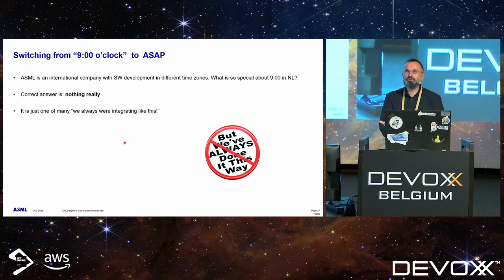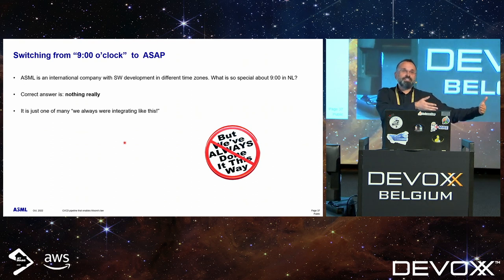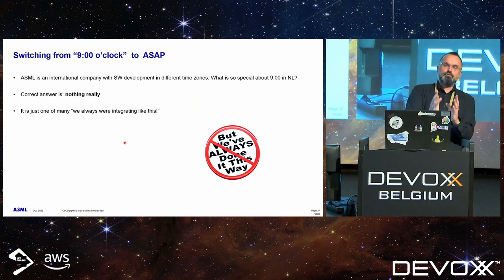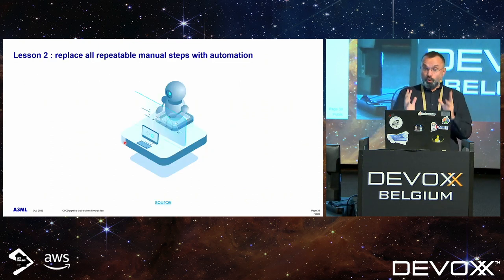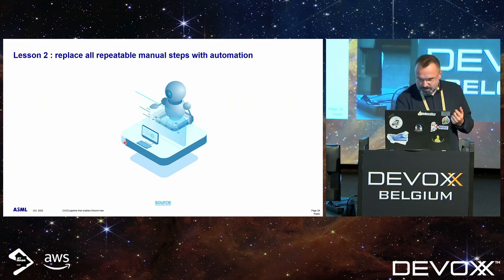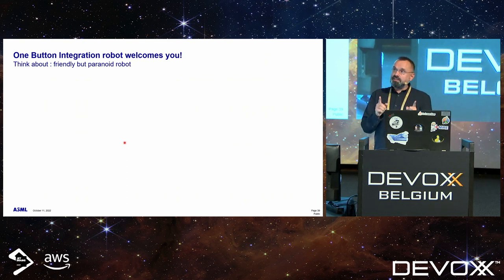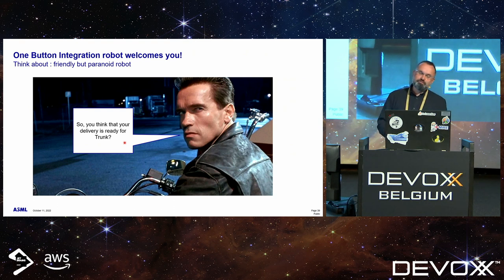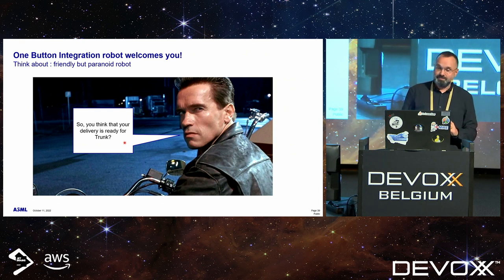We started basically from scratch. Having a target of integration open at 9 o'clock is ridiculous. Nine o'clock — which time zone? ASML became international. Developers in the United States are not happy that when they wake up, integration is already closed. So we decided: we need to close integration only to build, test, and analyze, then immediately open again — doesn't matter what time it is. We replaced everything with automation. I like to imagine our automation as a very friendly, infinitely patient, but super-paranoid robot.